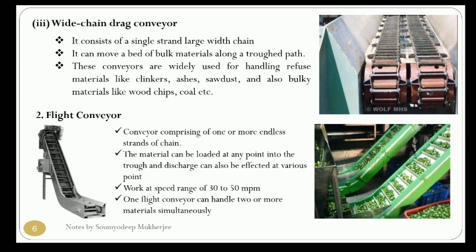The wide chain drag conveyor consists of a single strand, large-width chain which can move a bed of bulk materials along a trough path. The space between one set of links and the bottom sliding plate forms individual pockets for the bulk material. This conveyor is used for handling refuse materials like clinkers, ashes, sawdust, and bulk materials like wood chips and coal. The length of the chain is very high in this type.